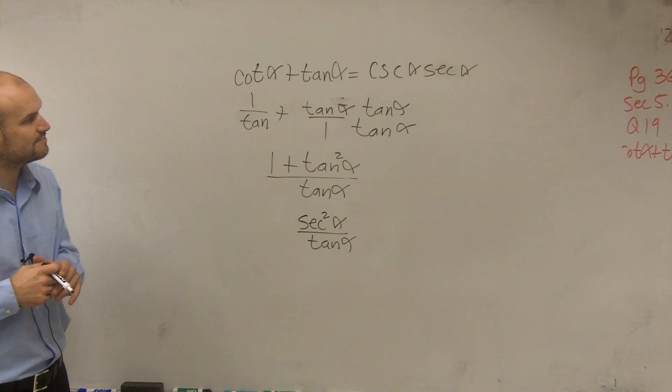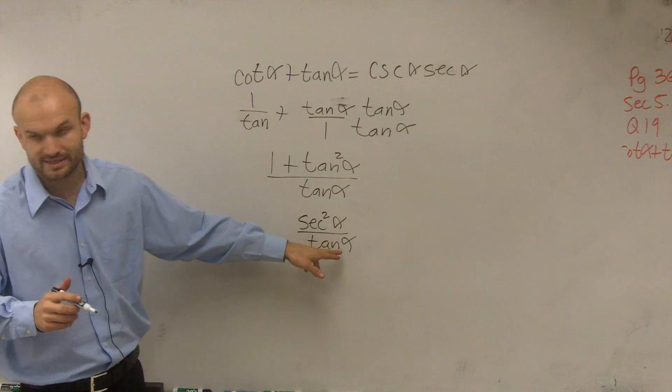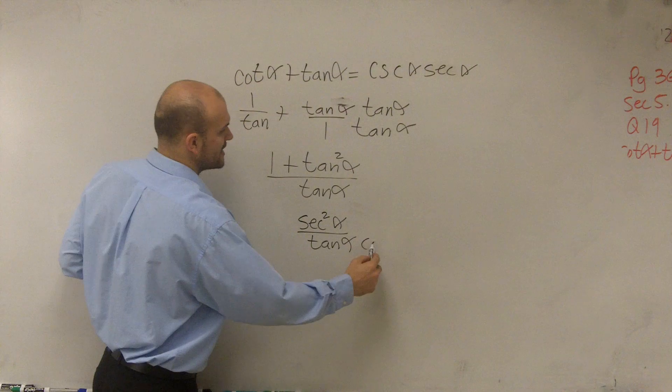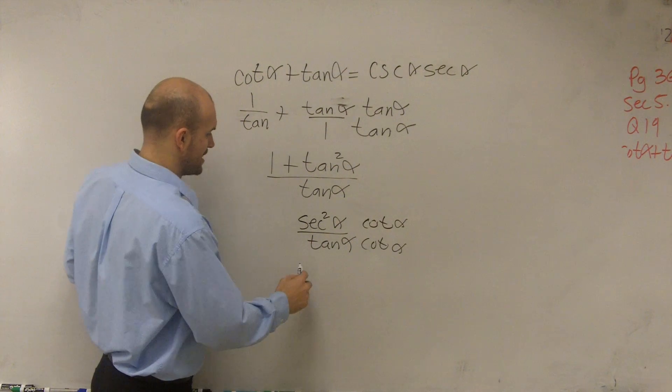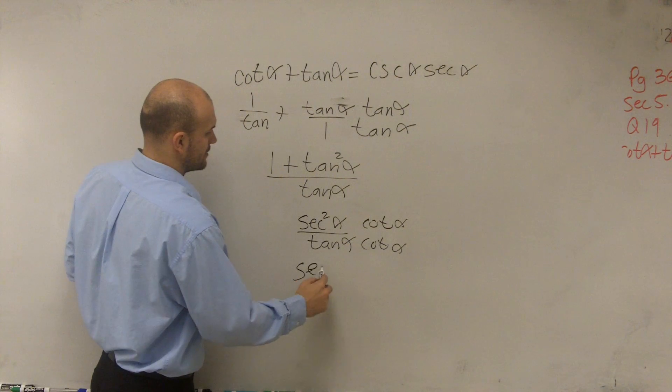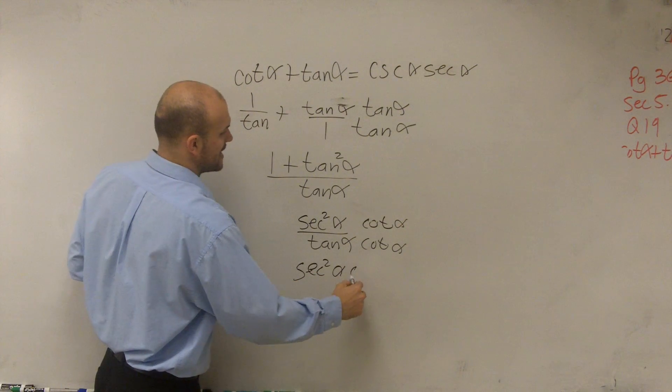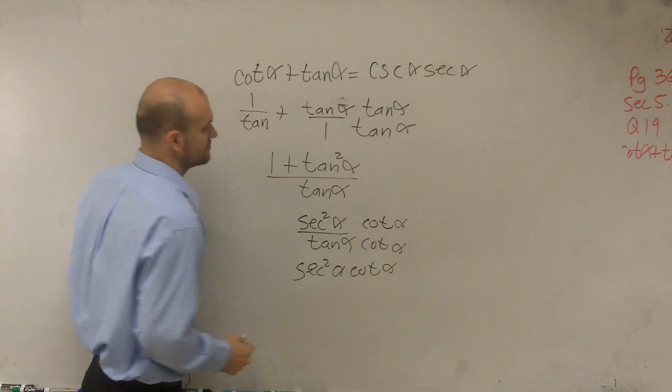Then, what we can simply do is just multiply to get the tangent off the bottom. You can multiply by cotangent of alpha on the top and bottom, and you're left with secant squared of alpha times cotangent of alpha.